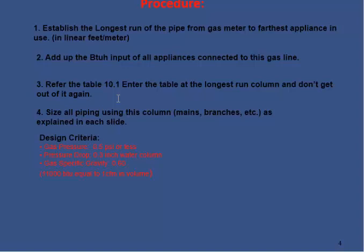The design criteria taken for this presentation is: gas pressure 0.5 psi or less—generally domestic gases are supplied at this pressure—pressure drop of 0.3 inches water column, and gas specific gravity of 0.6. Also, 1,000 BTU equals 1 CFM of natural gas.